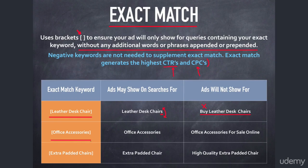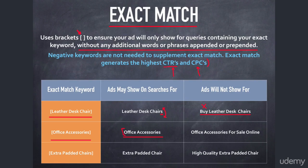Same thing with "office accessories" — here's my exact match keyword in brackets. A potential eligible query is simply "office accessories" — my exact keyword with nothing changed. But my ads will not show for "office accessories for sale online" because of the additional words. Keep in mind we're knocking out some good keywords again.